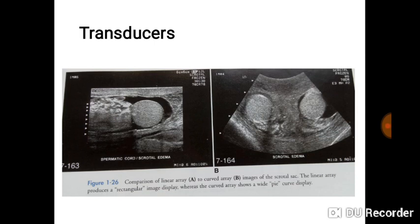Looking at examples of images from different transducer types: even when the structures are the same — in this case the testicles — the image from the linear is sharper than from the curvilinear. However, the curvilinear covers a wider area than the linear. You can clearly see that difference.